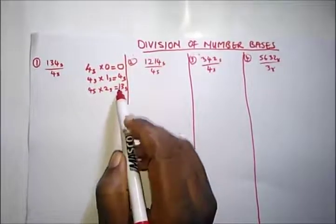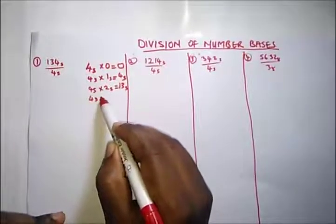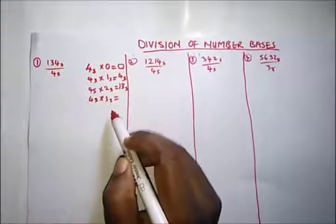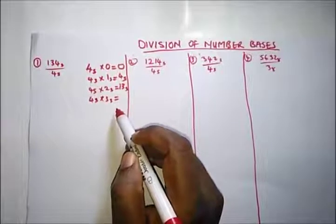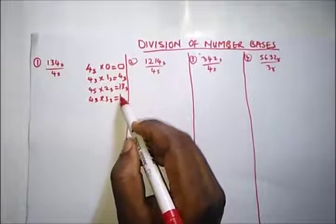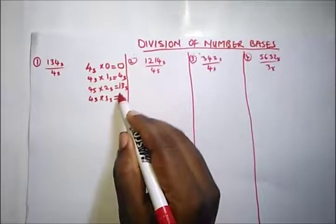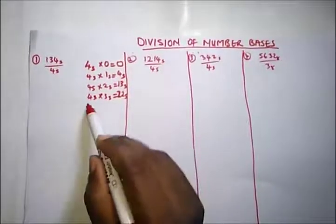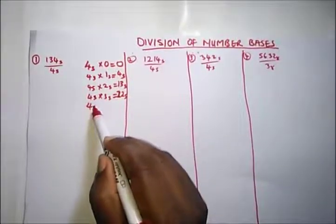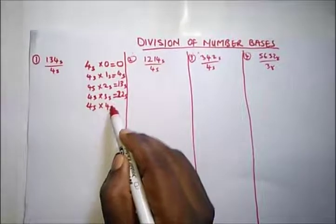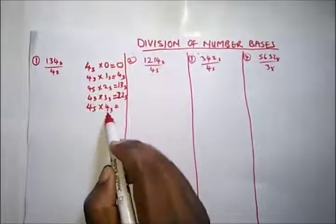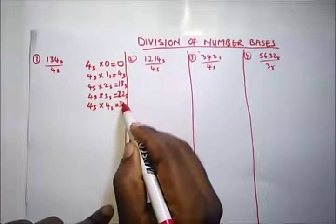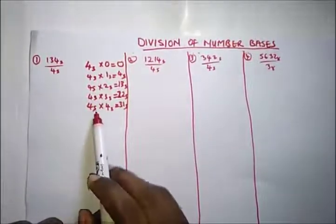4 base 5 times 3 base 5: that's 4 times 3 equals 12. How many times does 5 go into 12? Two times, with remainder 2. So 4 times 3 in base 5 is 22 base 5. 4 base 5 times 4 base 5: that's 4 times 4 equals 16. How many times does 5 go into 16? Three times, with remainder 1. So 4 times 4 in base 5 is 31 base 5.